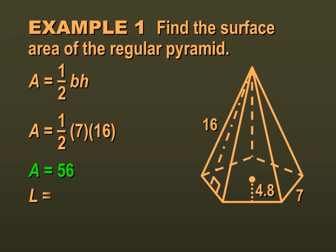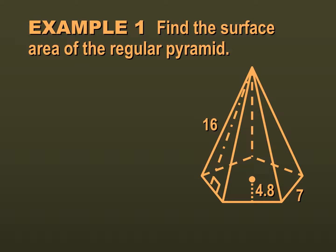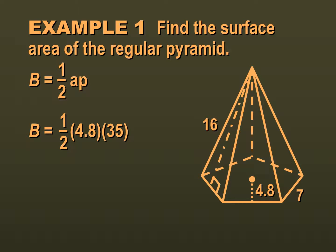We have five triangles, so five times 56 would be our lateral surface area, which is 280. Now that we have our lateral surface area, we need to find the area of our base, which is one half our apothem times our perimeter. Our apothem is 4.8, and we have a pentagon where each side is seven, so the perimeter is five times seven, which is 35. So the area of our base is one half times 4.8 times 35, which is 84.